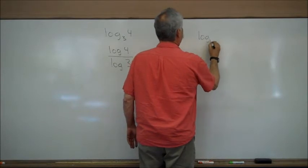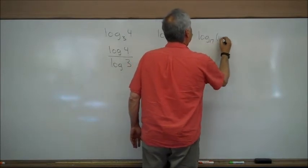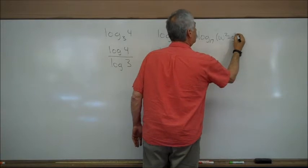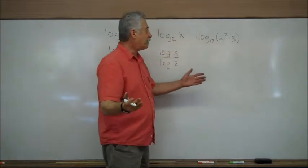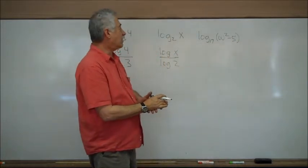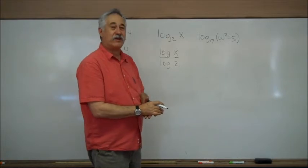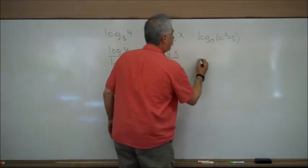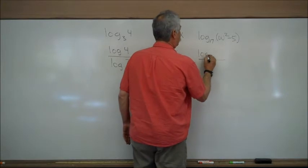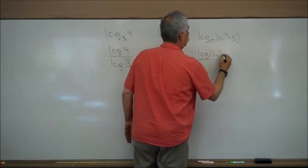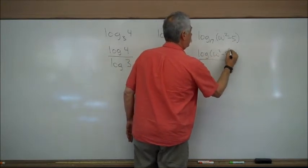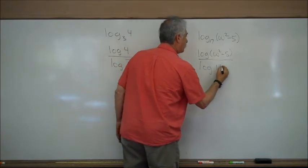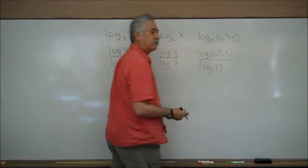Another example: logarithm base 17 of w squared minus 5. Write a fraction bar. Logarithm of (w squared minus 5) over logarithm of 17. And you're done.